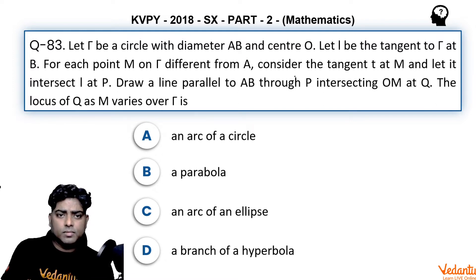For each point M on Γ different from A, M can be anywhere on the circle. Consider the tangent small t at M and let it intersect I at P.